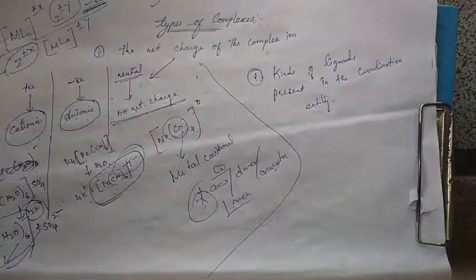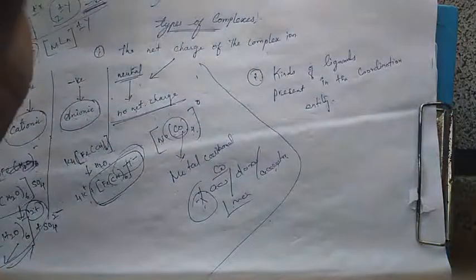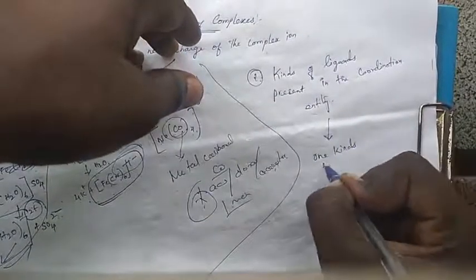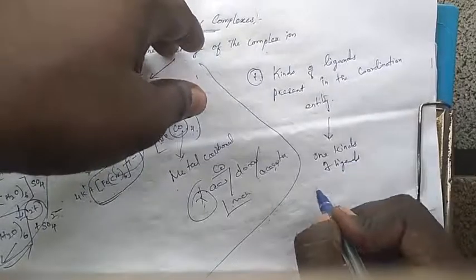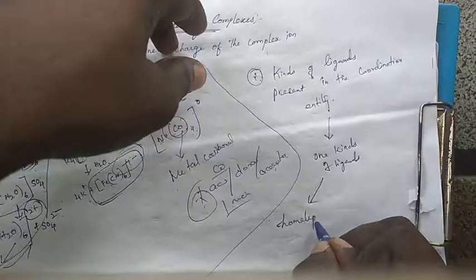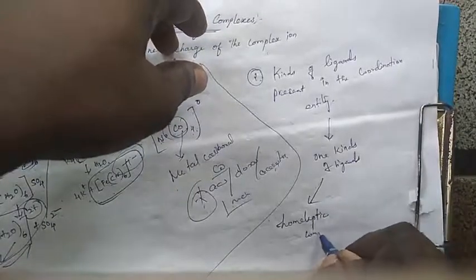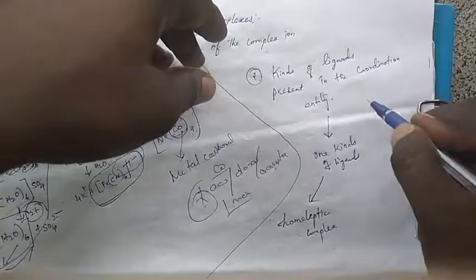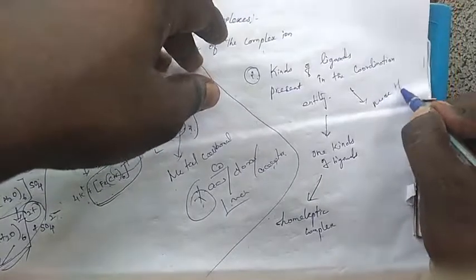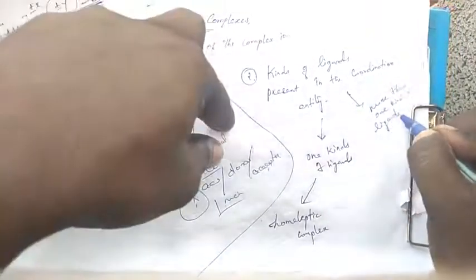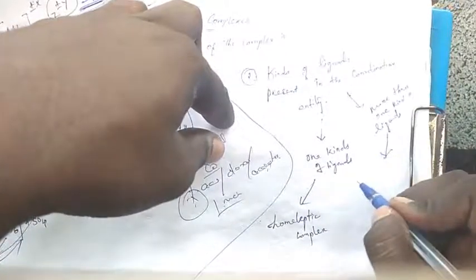First: when the central metal atom is coordinated to only one kind of ligand, it is called a homoleptic complex. When the central metal atom is coordinated to more than one kind of ligands, it is called a heteroleptic complex.